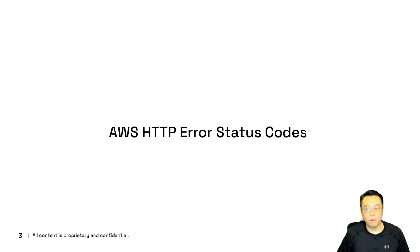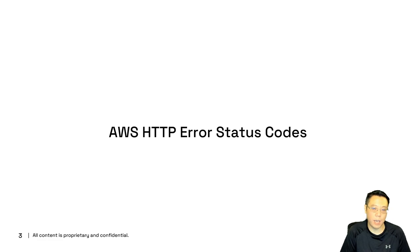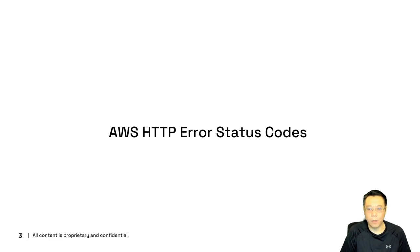Let's start off with AWS HTTP error status codes. Now traditionally, in previous foundations modules, you saw 200 means okay, the 400 series is a client-side condition — usually 401 for unauthorized — and 500 for a general internal server error. Let's dig a little bit deeper into what those mean and where the error conditions are precisely in terms of AWS services.